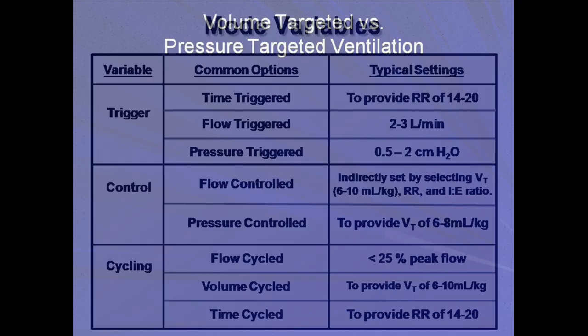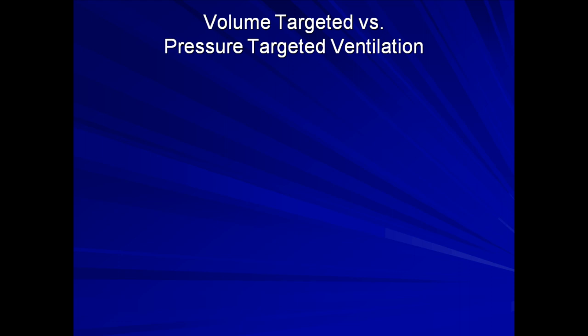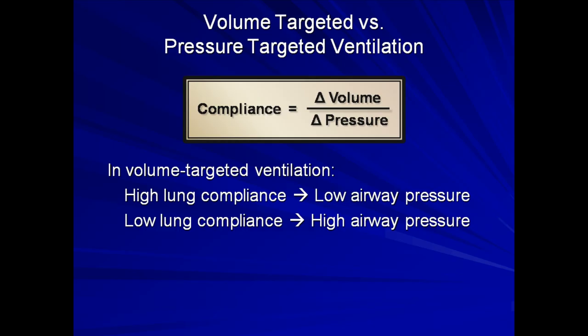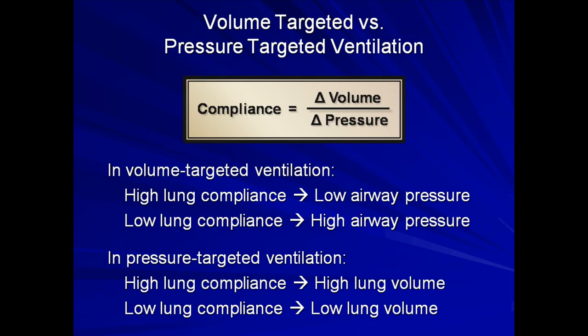You should also be familiar with the terms volume targeted and pressure targeted. Volume targeted ventilation describes any mode in which the clinician is able to ensure the patient's inspiratory pressure does not exceed a maximum pre-specified value. Remember that lung compliance equals the change in volume over the change in pressure. Therefore, by setting either volume or pressure, lung compliance will dictate the value of the remaining parameter. In volume targeted ventilation, high compliance results in low airway pressures and low compliance results in high airway pressure. While in pressure targeted ventilation, high lung compliance results in high lung volume and low compliance results in low lung volume.